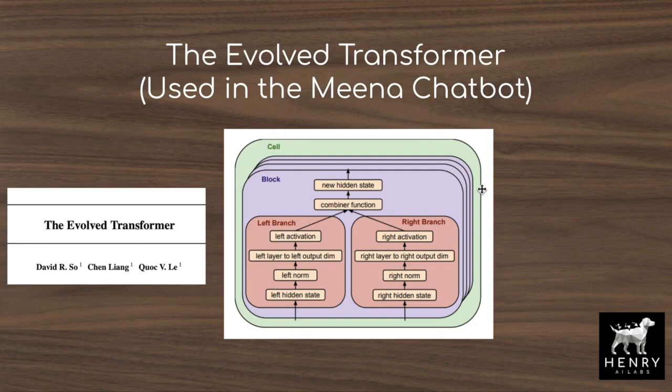So in the Evolved Transformer, the researchers have manually defined the design space. Now this paper is looking to pop one level higher in the stack and automatically search for the design space as well as searching through it to produce the neural network — automatically designing this predefined parameterization from which possible neural networks can emerge.